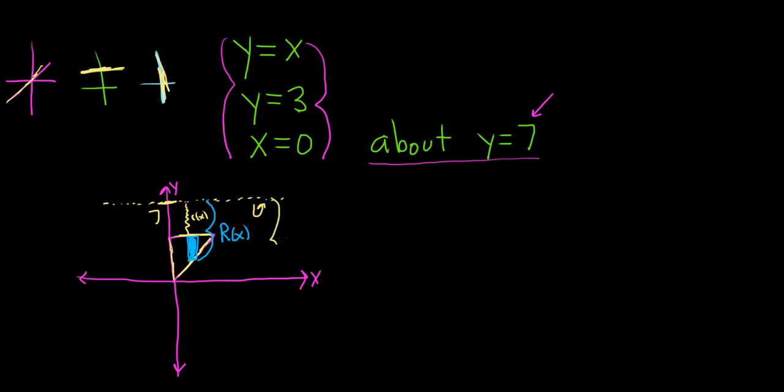Okay, so this distance here is 7. This distance here is x. So big R of x is equal to 7 minus x. Okay, you take the 7, and then you take away this distance, and it gives you 7 minus x.